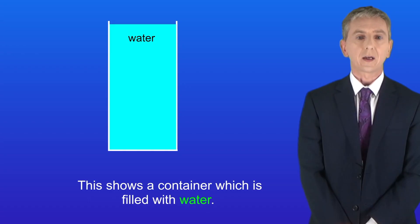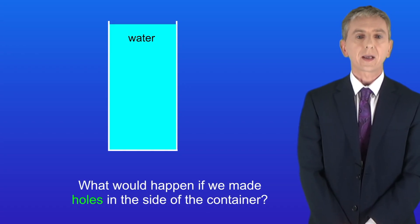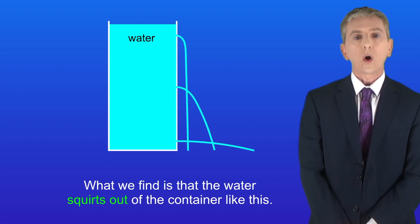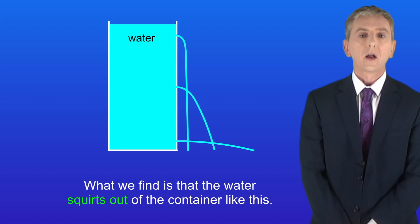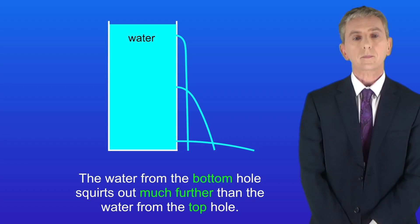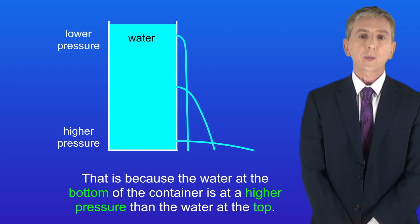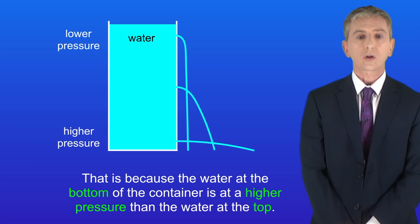I'm showing you here a container which is filled with water. What would happen if we made holes in the side of the container? What we find is that the water squirts out of the container. The water from the bottom hole squirts out much further than the water from the top hole, because the water at the bottom of the container is at a higher pressure than the water at the top.